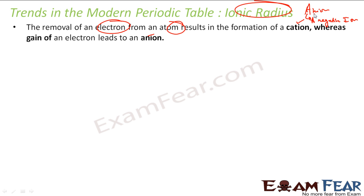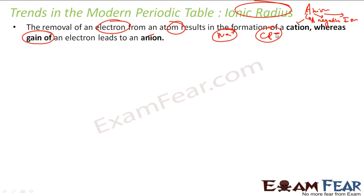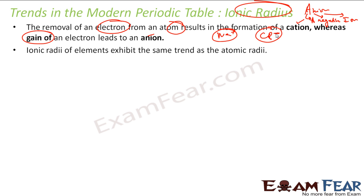Anion is the full form of 'a negative ion.' The one with a negative charge is an anion — please don't be confused. Anion means a negative ion; it has gained one electron. For example, Cl⁻ is an anion and Na⁺ is a cation. So anything which is not neutral — any atom which has a negative or positive charge — is called an ion, and we will talk about ionic radius.